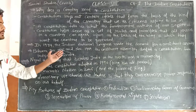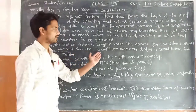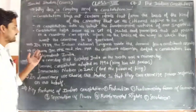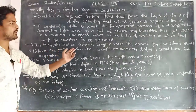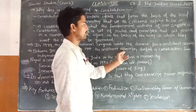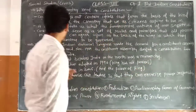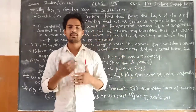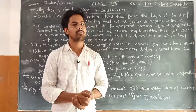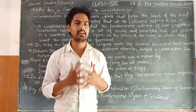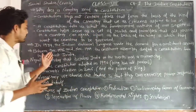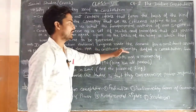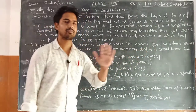Between December 1946 and November 1949, the Constituent Assembly drafted a Constitution for independent India. 1934 में INC ने Constituent Assembly की demand रखी थी, वो form भी हुई, लेकिन India तब independent नहीं हुआ था. 1946 से 1949 के बीच Constituent Assembly ने Constitution draft किया, जो 1950 में लागू हुआ.